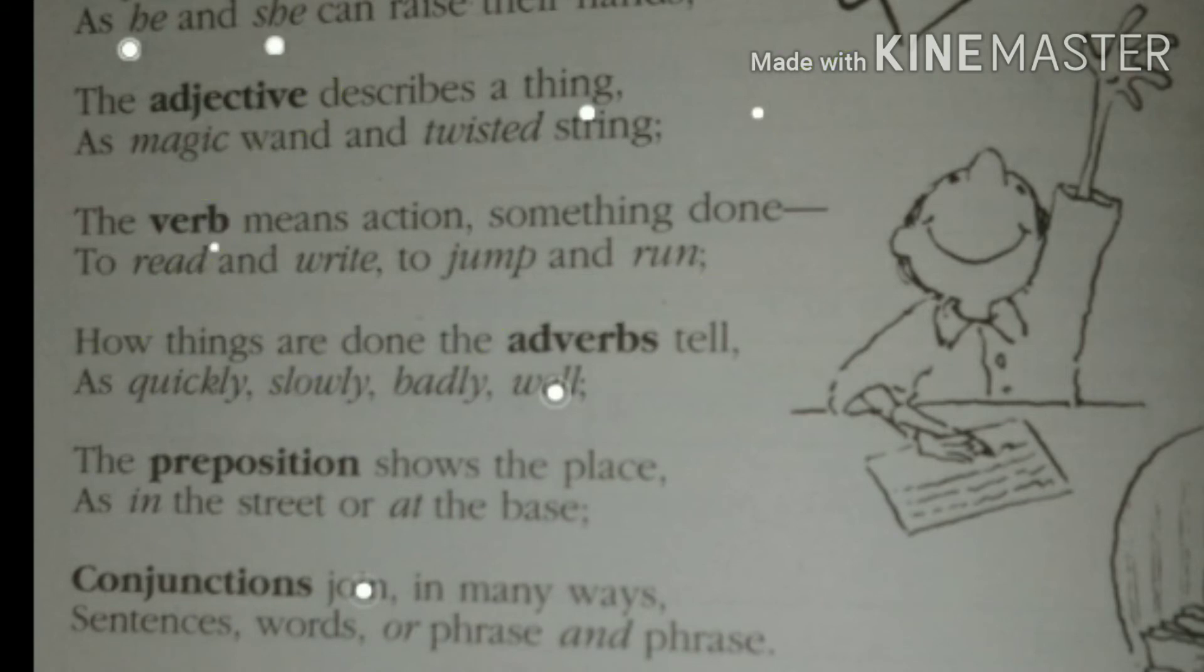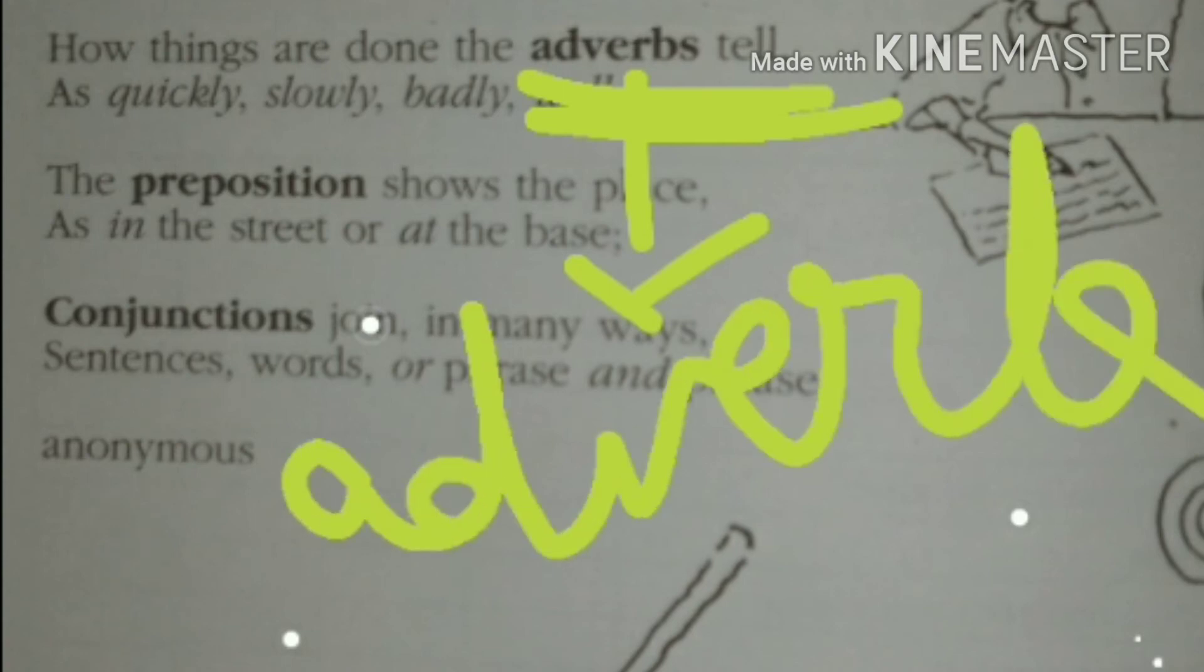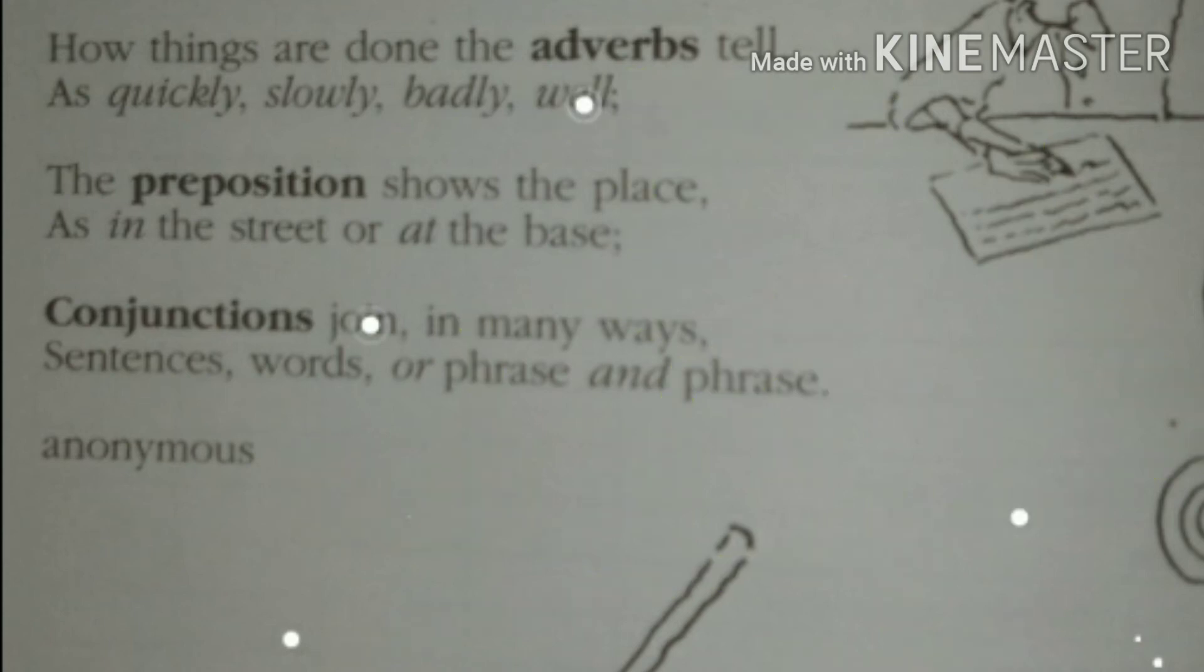How things are done, the adverb tells. Adverb. You can see the word verb here itself and ad. That means it adds to the verb, gives additional information about the verb. That is called adverb. Remember this. The words which tell about the verbs are called adverbs. Like here it's written: quickly, slowly, badly and well.